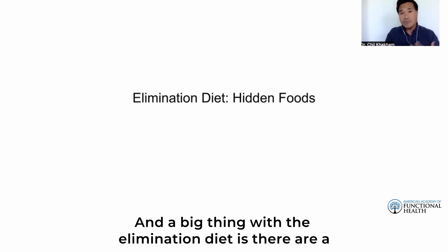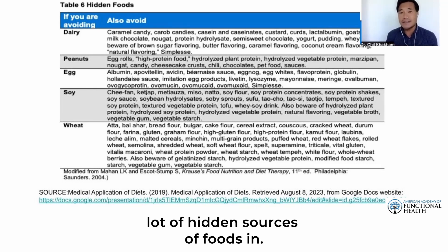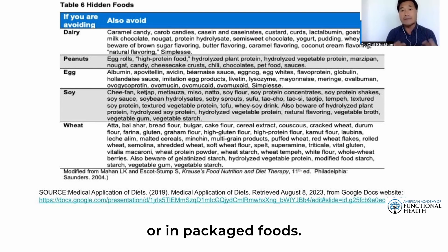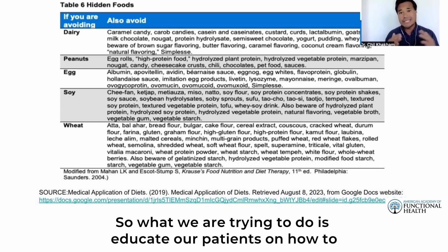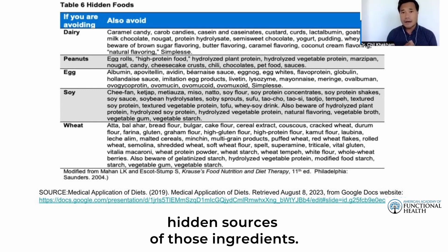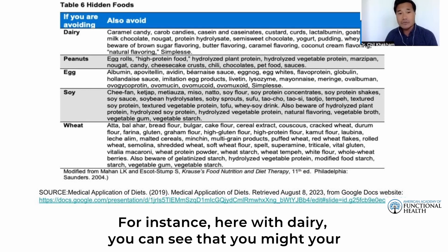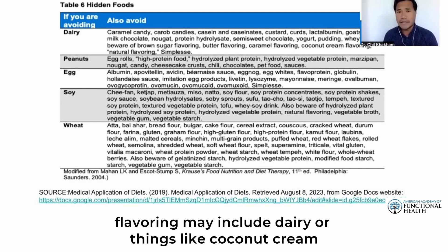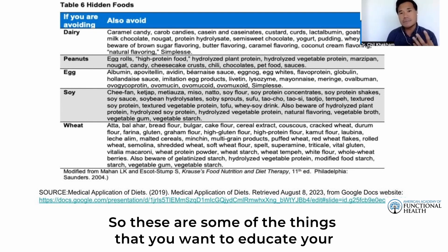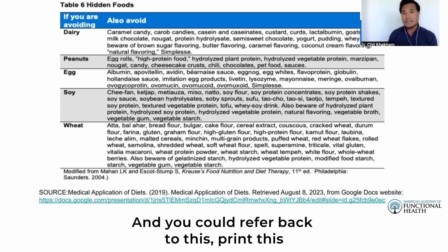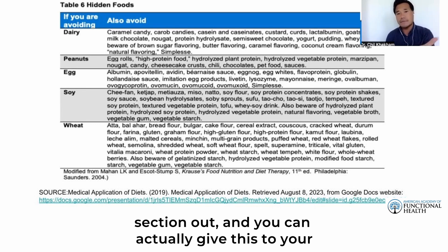A big thing with the elimination diet is that there are many hidden sources of foods in things like dairy, eggs, soy, or packaged foods. We want to educate our patients on how to read labels and identify hidden sources of those ingredients. For instance, patients might not know that caramel candy or caramel flavoring may include dairy, or that coconut cream flavoring may include dairy as well. You can print this section out and give it to your patients.